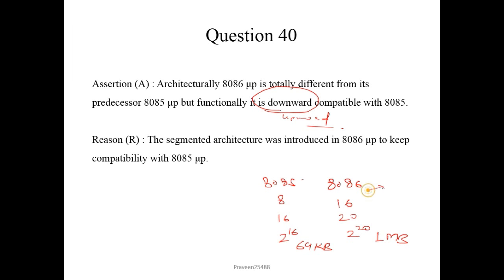Also in 8086, there is an instruction queue which supports the pipeline process. And this also supports the multiprocessing. The segmented architecture was introduced in 8086 to keep compatibility with 8085 microprocessor. So here segmentation is in 8086, not in 8085. So this is correct. So reason is true, assertion false. So again we will choose option 4.